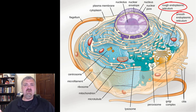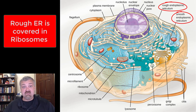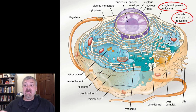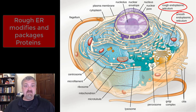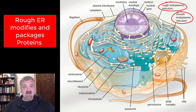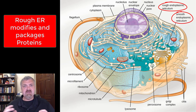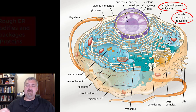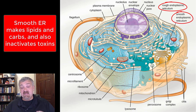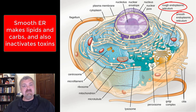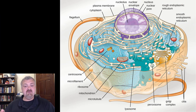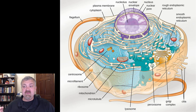The next two are related: the rough and smooth endoplasmic reticulum. Both are flattened chambers where materials move through, but the rough ER is studded with ribosomes — that's why it looks rough. The rough ER handles modification and packaging of proteins produced by those ribosomes. The smooth ER has no ribosomes, so it's involved in making lipids and carbohydrates, and it also inactivates toxins. Liver cells, for example, have far more smooth ER than most other cells.